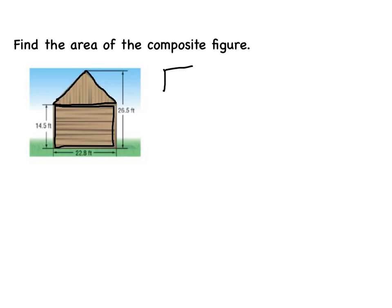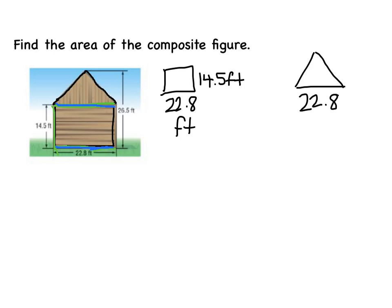So I'm going to start with my rectangle, and I know that my rectangle is 22 and 8 tenths feet by this distance right here, which is 14 and 5 tenths feet. And now I'm going to draw my triangle, and I know that my triangle, the base is right here, which is the same distance as this base. Let me use a different color. As this base right here. So this base is the same. So that's 22 and 8 tenths. Now I have to find the height of my triangle, or I could draw my height right here as long as I've got that right angle.